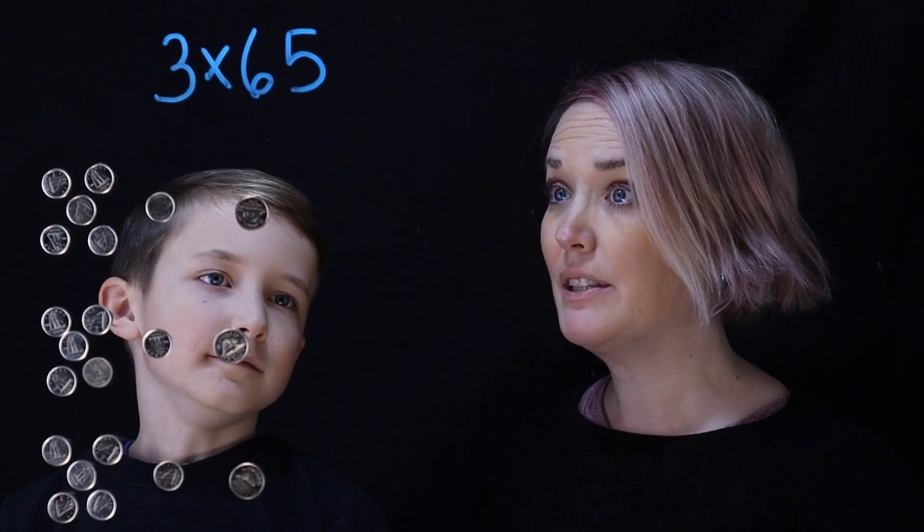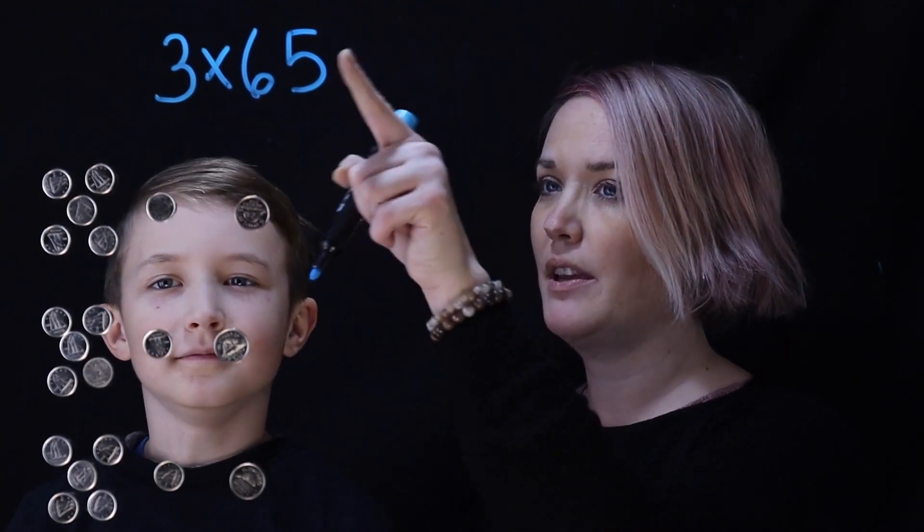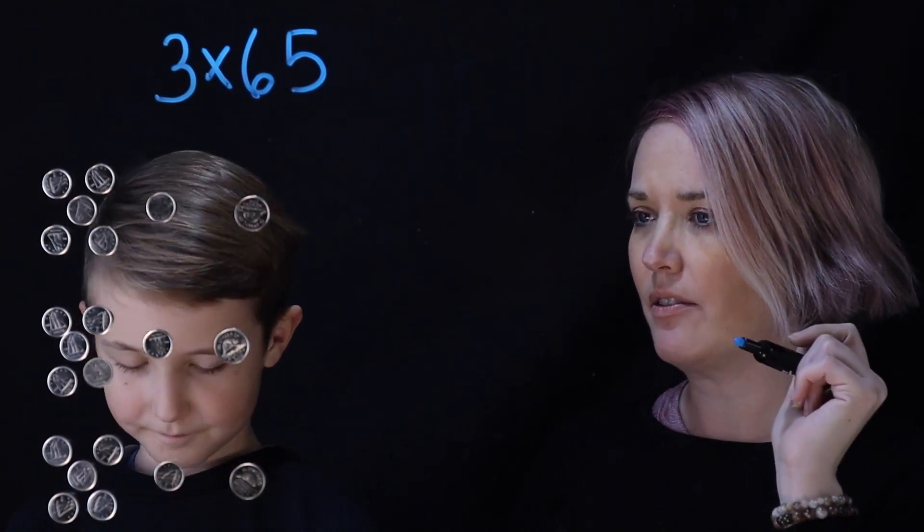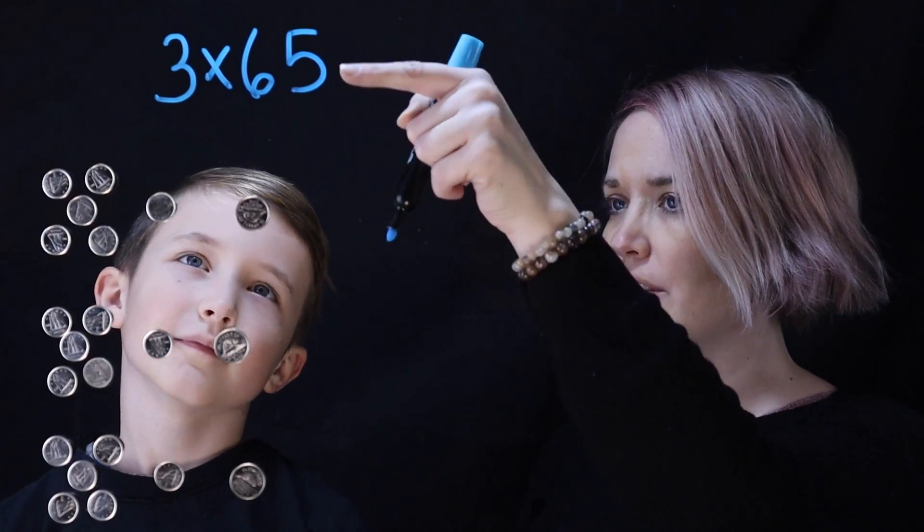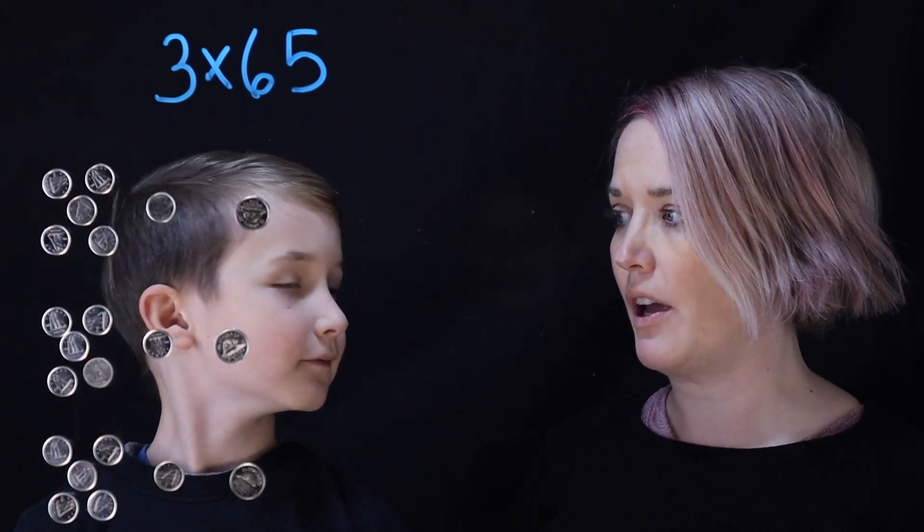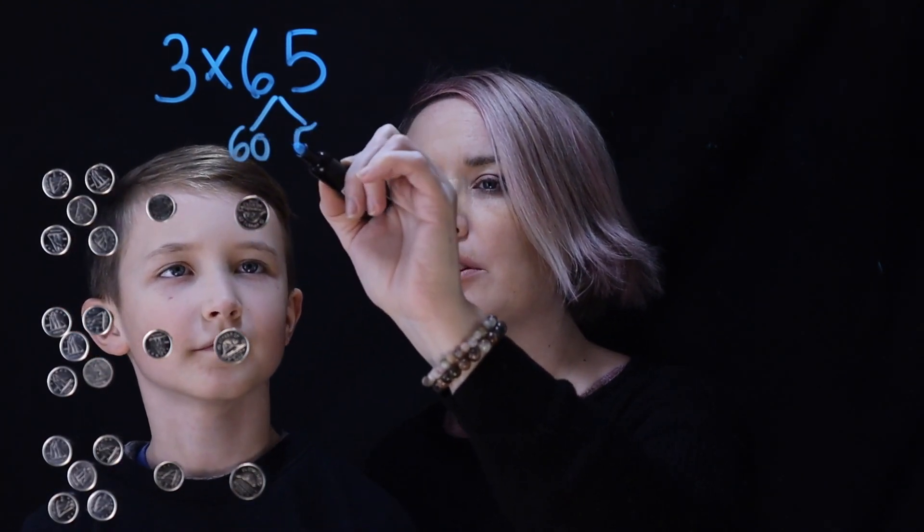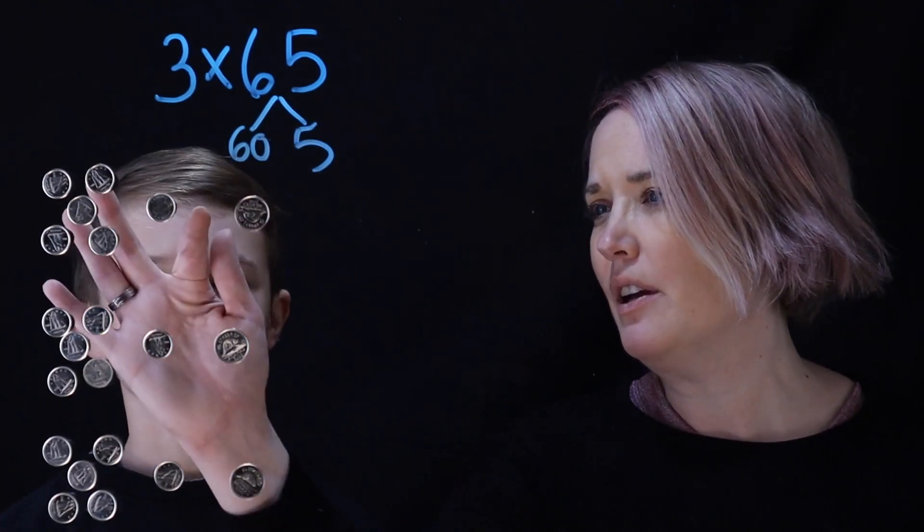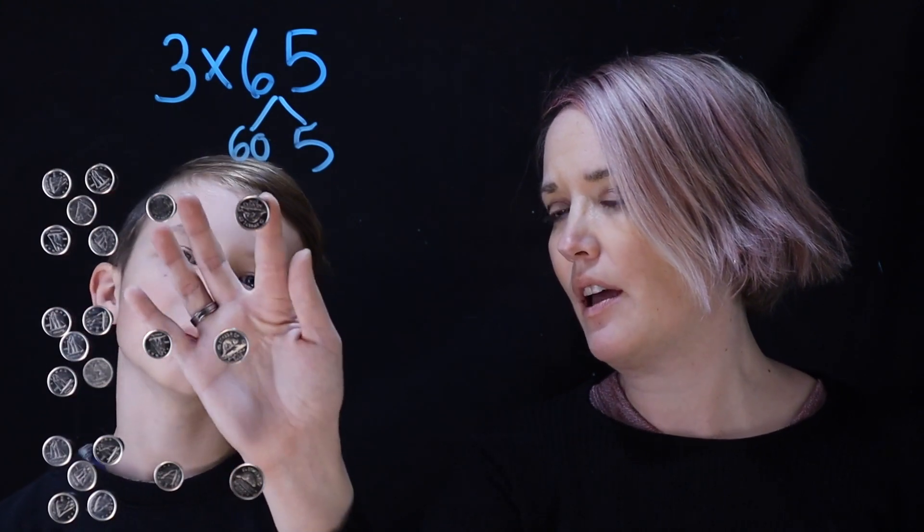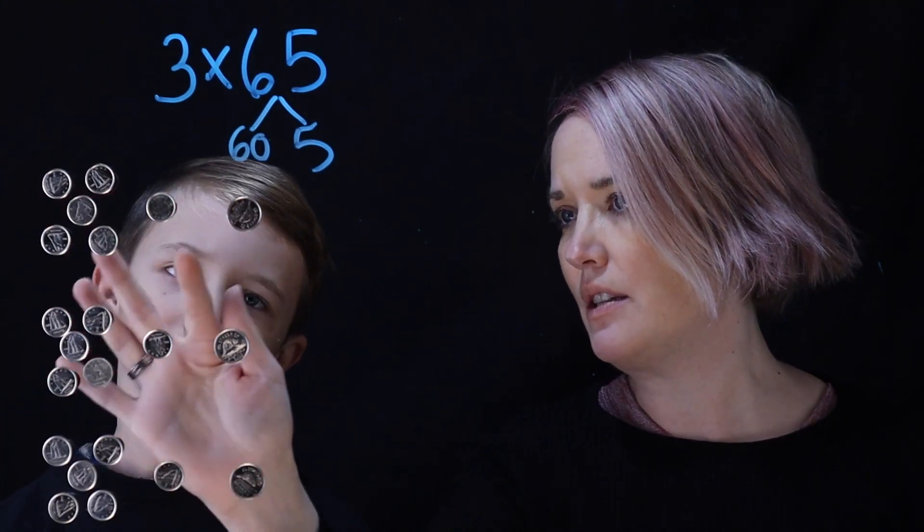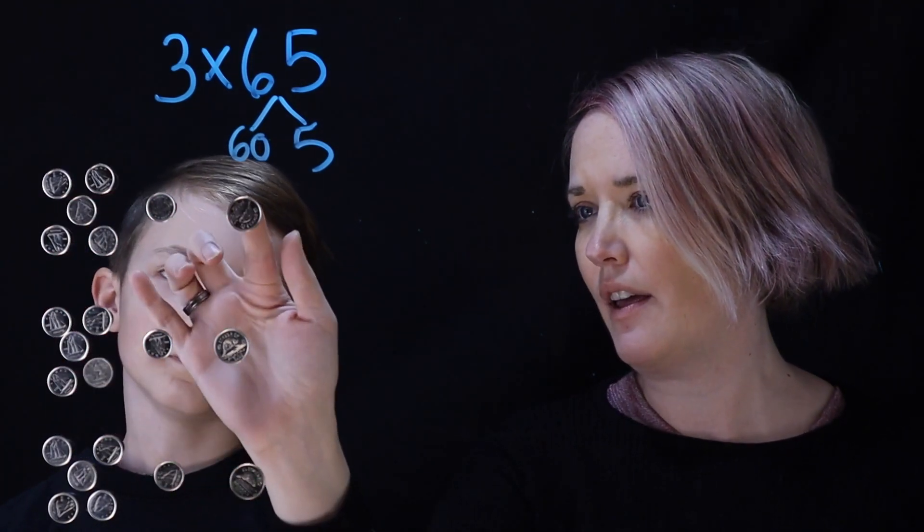Hi everyone. Louie's going to tell us how he thinks about 3 times 65. Now Louie how do you, because you split the 65 right into what? Into 60 and 5. Okay and then I'll show you what I put out here so that people can really see. So I put out six dimes and a nickel. So 60 cents here and then 5.